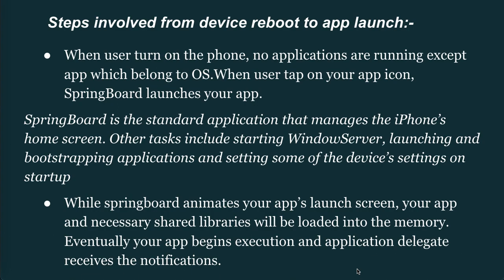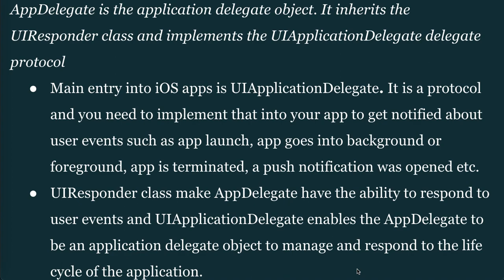Eventually your app begins execution and the application delegate receives its notification. The App Delegate is the application delegate object — it inherits the UIResponder class and implements the UIApplicationDelegate protocol. The main entry point into iOS apps is UIApplicationDelegate. It is a protocol and you need to implement it into your app to get notified about user events such as app launch, app going into background or foreground, app termination, and push notifications. UIResponder class makes the App Delegate able to respond to user events, and UIApplicationDelegate enables the App Delegate to manage and respond to the life cycle of the application.